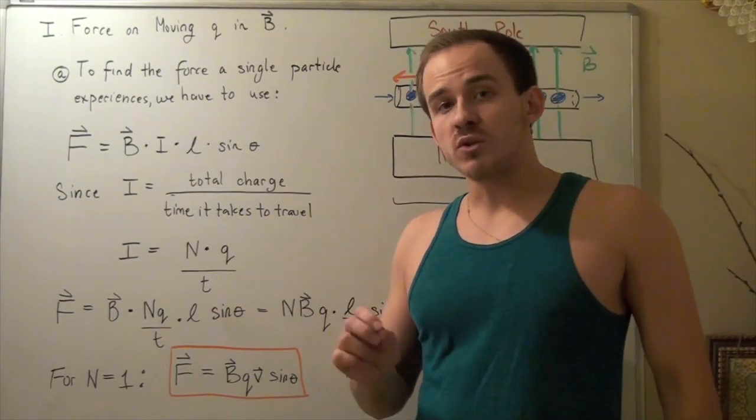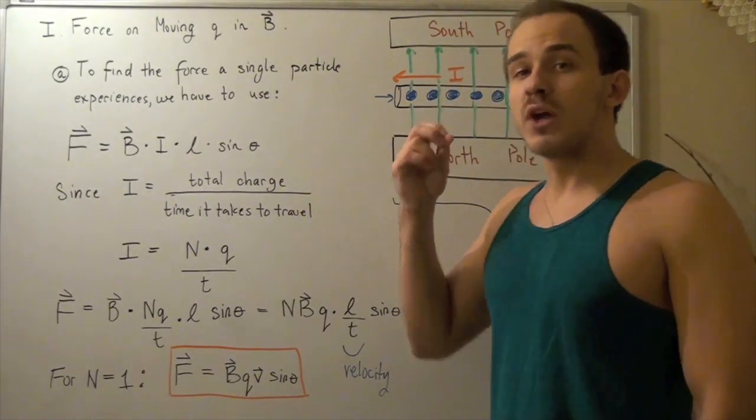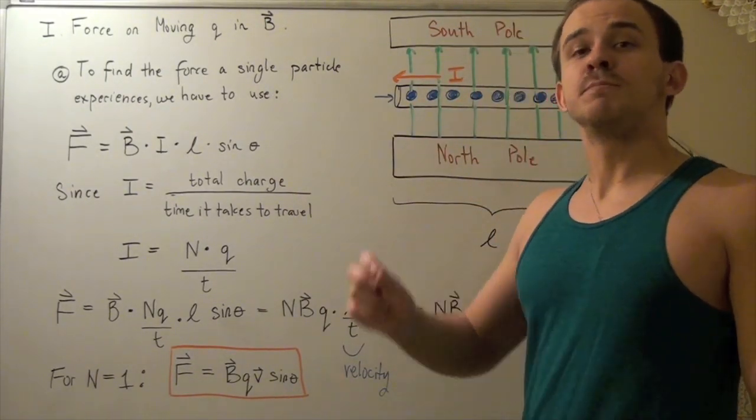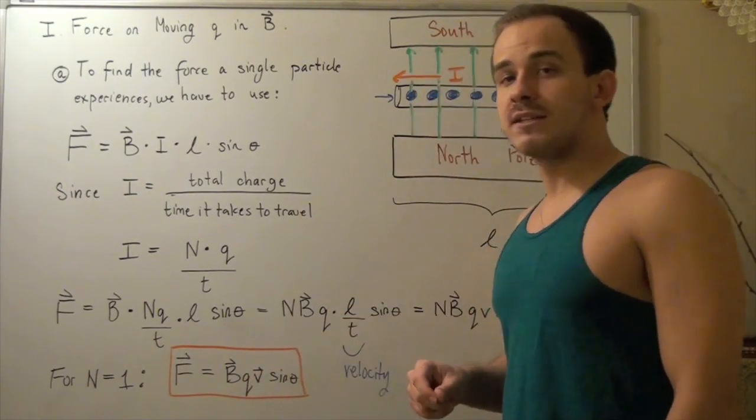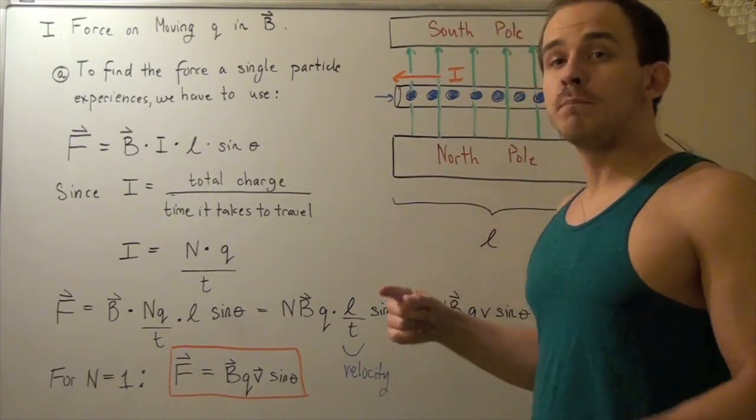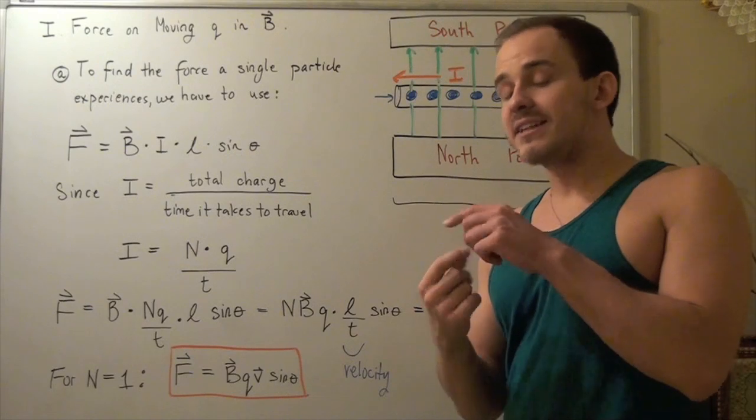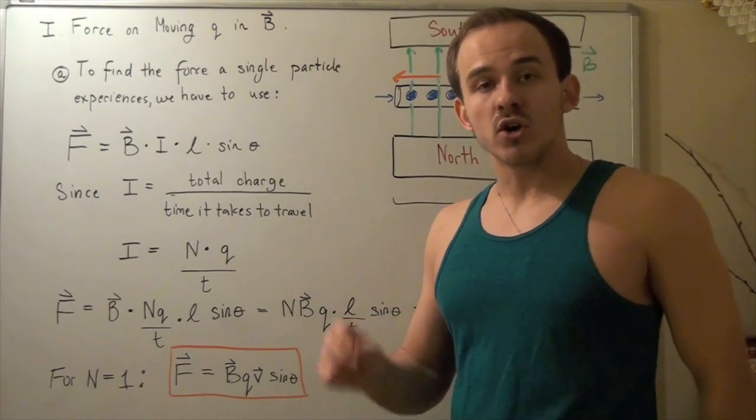Now, one important note about our result. Note that the force we get, the direction of that force, is perpendicular to both my velocity vector and my magnetic field vector. And that means that since our vectors are perpendicular to each other at a 90-degree angle, no work is done on my charged particle.